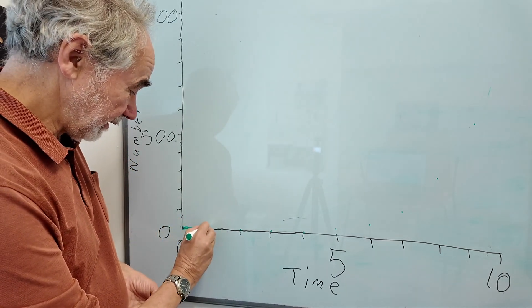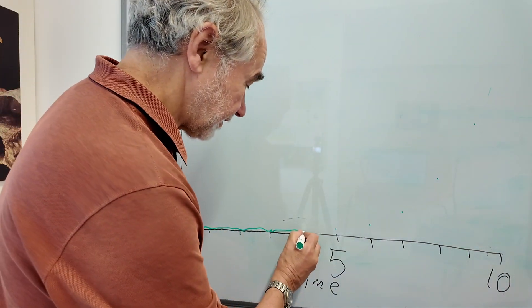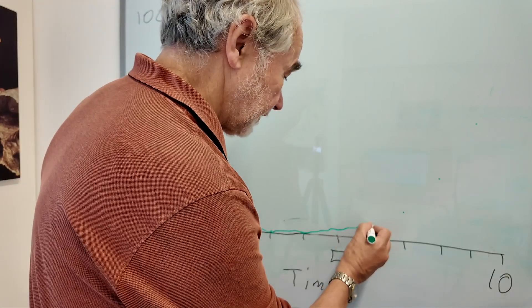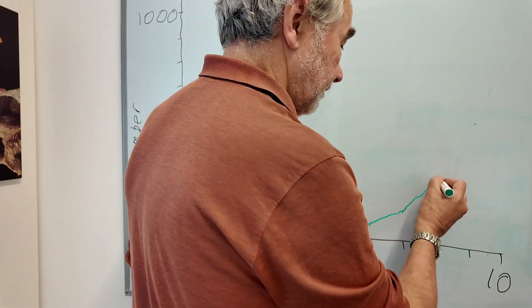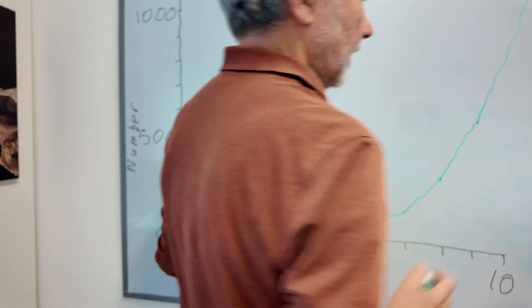So first time interval you'll have 2, then 4, then 8, then 16, then 32, 64, 128, 256, 512, 1024.